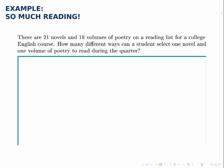There are 21 novels and 18 volumes of poetry on a reading list for a college English course. How many different ways can a student select one novel and one volume of poetry to read during the quarter?